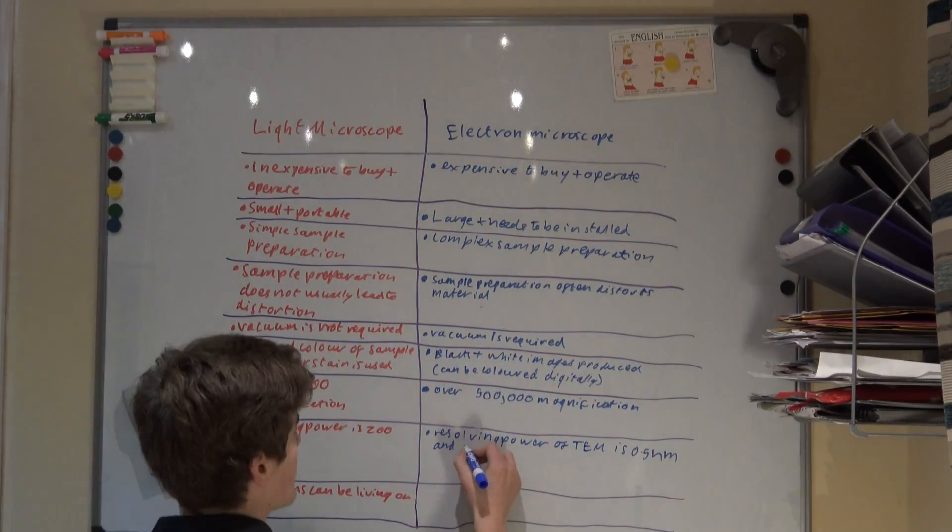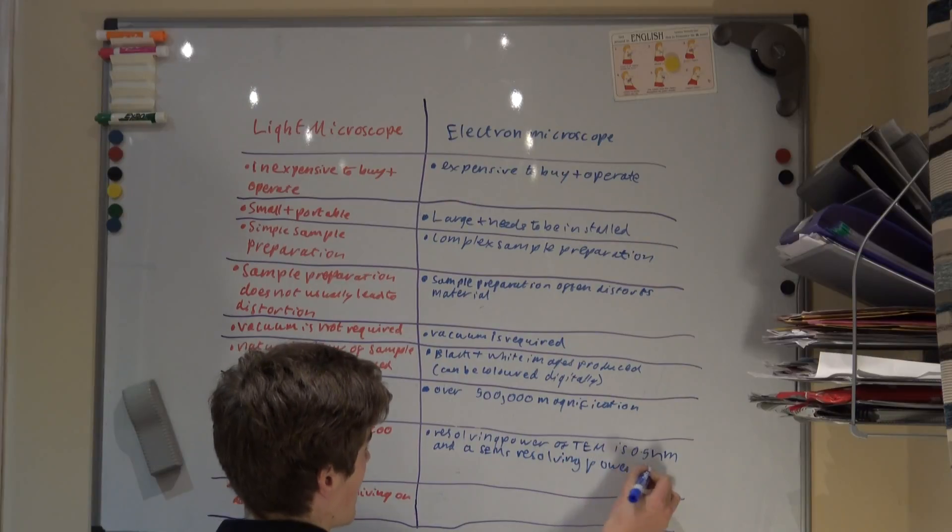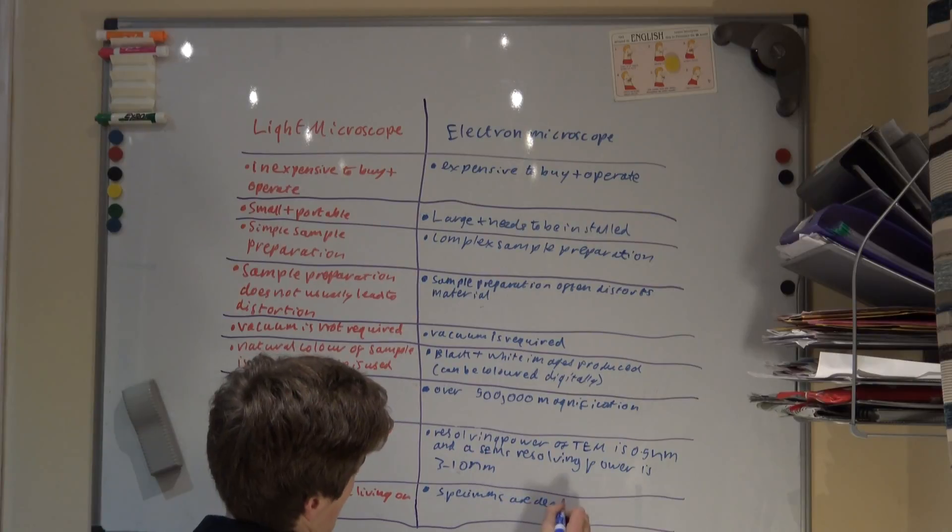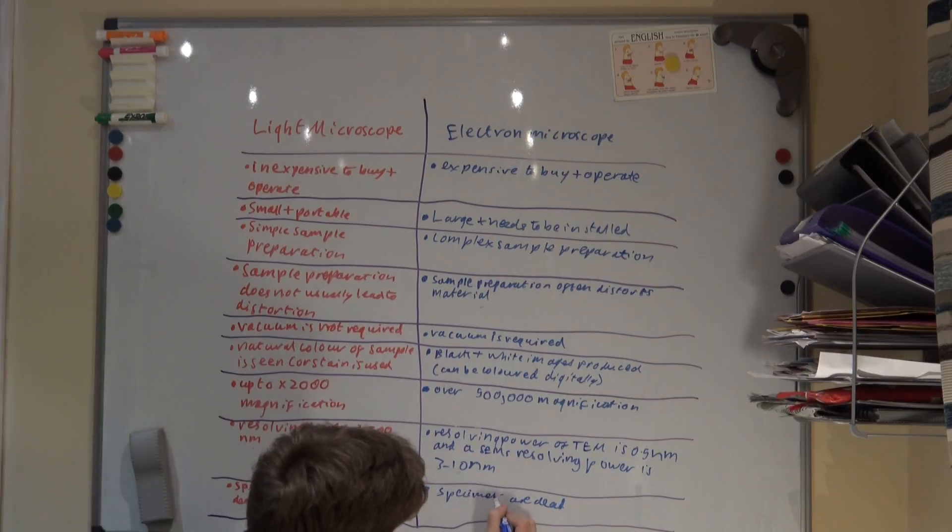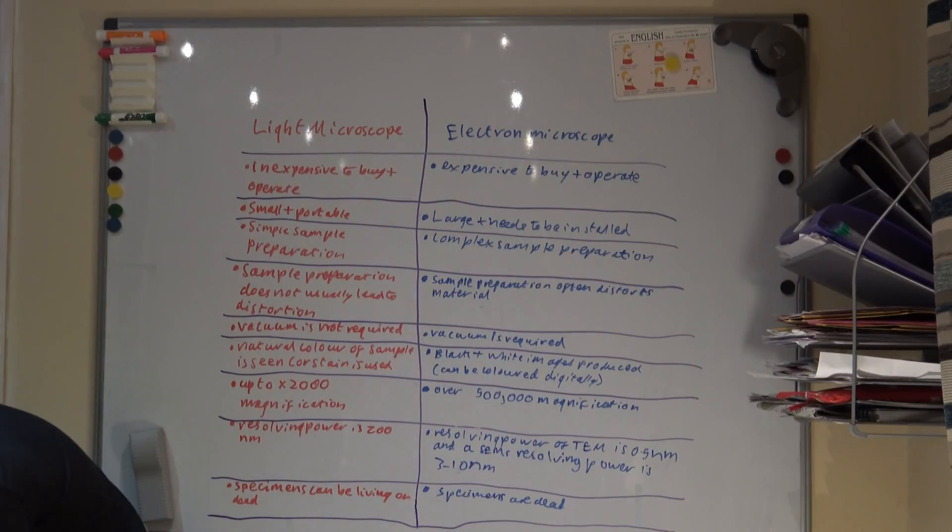On screen, you can hopefully see a table summarising the differences between light and electron microscopes, showing the huge magnification and resolutions the electron microscope has. Yet how expensive and complex it is, this probably explains to you why electron microscopes are rarely found in schools.